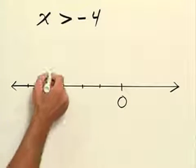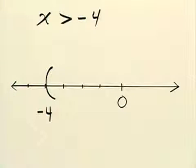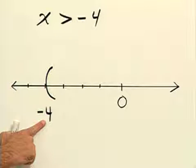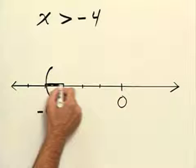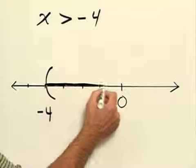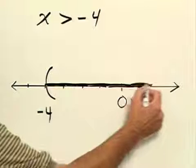Remember when it is a greater than sign we use parentheses to show that we're not including negative 4 as part of our solution. And then we shade in the direction that shows greater than negative 4, so we're going to shade in this direction and put an arrow at the end of the shading.